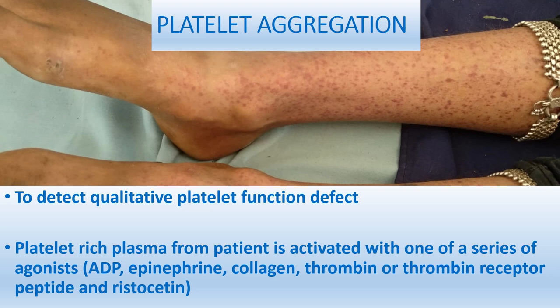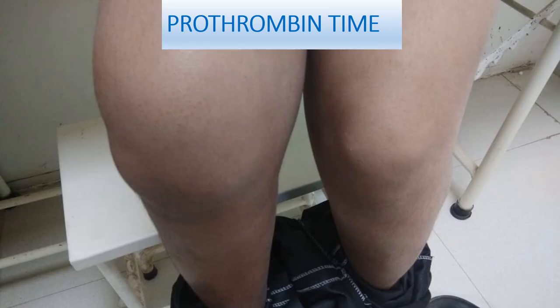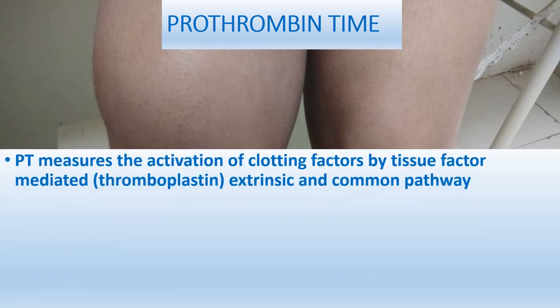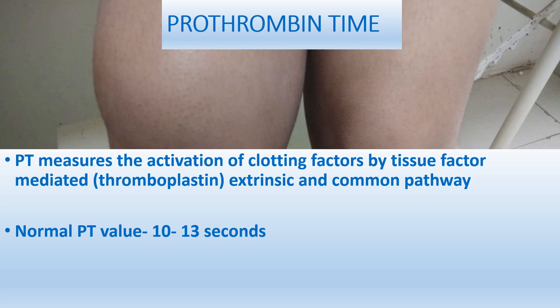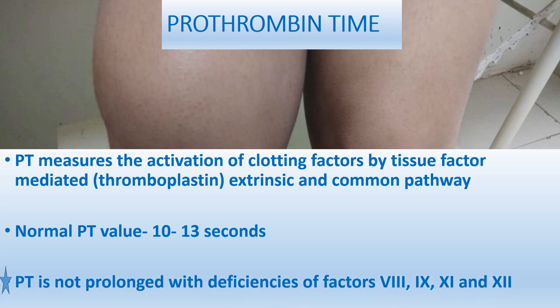In platelet aggregation testing, platelet-rich plasma from the patient is activated with a series of agonists: ADP, epinephrine, collagen, thrombin receptor peptide, and ristocetin. Ristocetin-induced platelet aggregation is affected in Bernard-Soulier syndrome but normal in Glanzmann's thrombasthenia. Prothrombin time measures activation of clotting factors by the tissue factor-mediated extrinsic and common pathway. Normal PT value is 10 to 13 seconds, and PT is not prolonged with deficiency of factors 8, 9, 11, or 12.